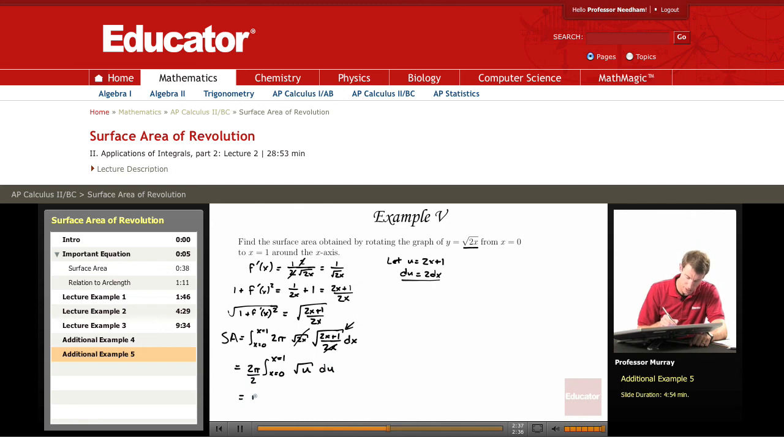So we get pi times the integral from x equals 0 to x equals 1 of the square root of u du. And so the point of that was that the square root of u is an easy integral. You think of that as u to the 1 half, and then the integral of u to the 1 half is u to the 3 halves divided by 3 halves, which is the same as multiplying by 2 thirds.